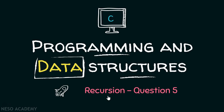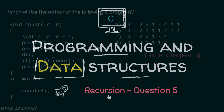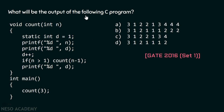It's time to consider one more question on recursion. What will be the output of the following C program? Here is a C program available in front of you. You need to determine what is the output of this C program. Is it A: 3 1 2 2 1 3 4 4 4? Is it B: 3 1 2 1 1 1 2 2 2? Is it C: 3 1 2 2 1 3 4? Or is it D: 3 1 2 1 1 1 2? This question has been asked in GATE 2016, Set 1.